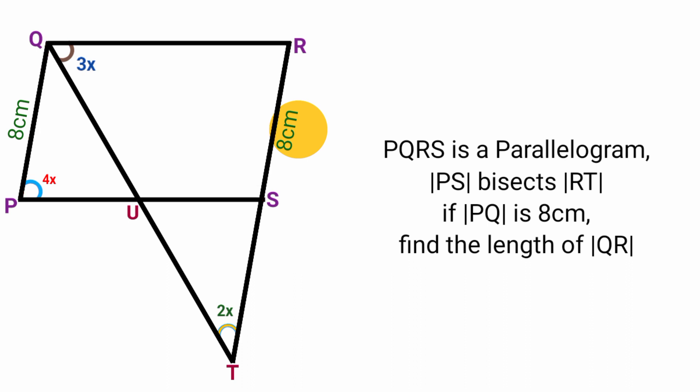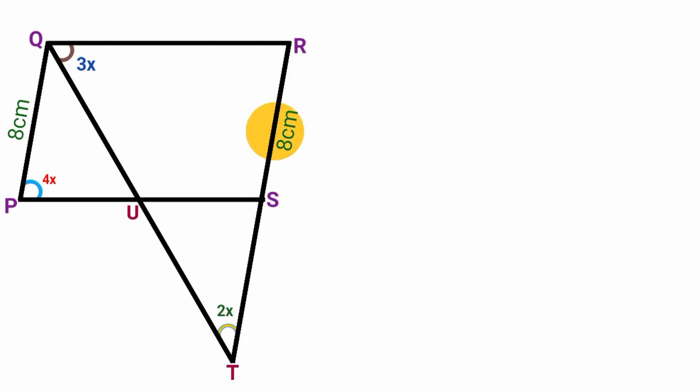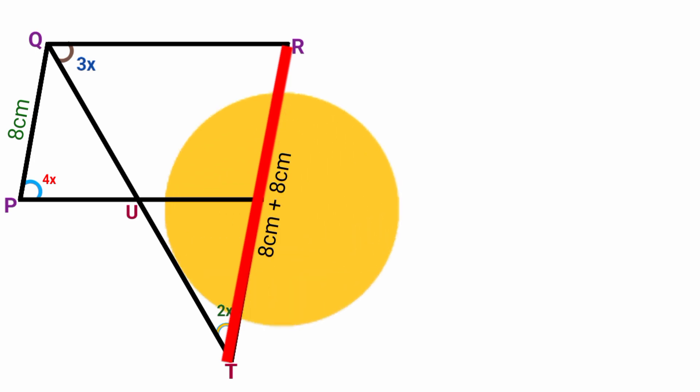They say line PS bisects line RT, meaning line PS divides line RT into two equal halves, and hence this is a midpoint of line RT. So line RS equals line ST, and therefore line ST also equals 8 centimeters. Since this is 8 centimeters and this is 8 centimeters, line RT will equal 8 centimeters plus 8 centimeters, which is 16 centimeters.